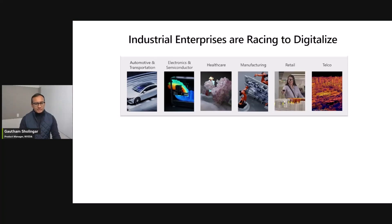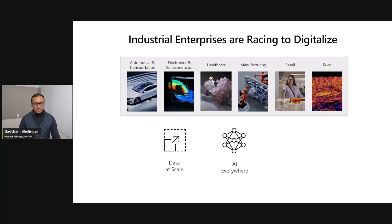Industrial enterprises are racing to reinvent and disrupt themselves into becoming software-defined technology companies, but digital transformation is not new. What's new is the scale of the problem. As the world becomes more digital, every factory, robot, building, and process has become a rich source of data, generating billions of data points, and AI feeds on this data. From computer vision models detecting defects in the manufacturing process to large language models that can offer context-specific technical support, AI is everywhere.